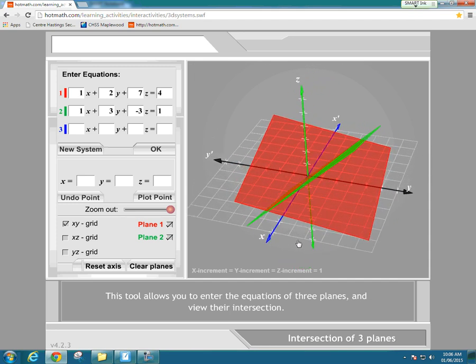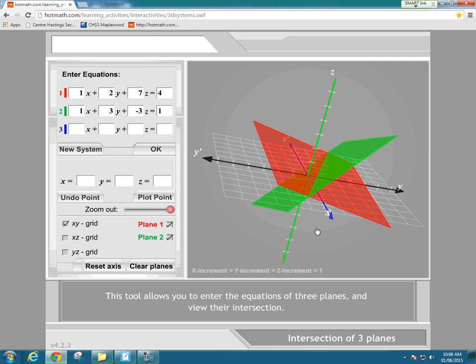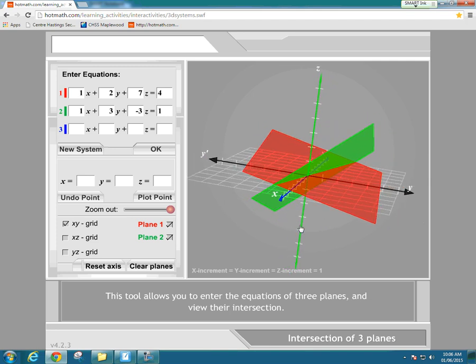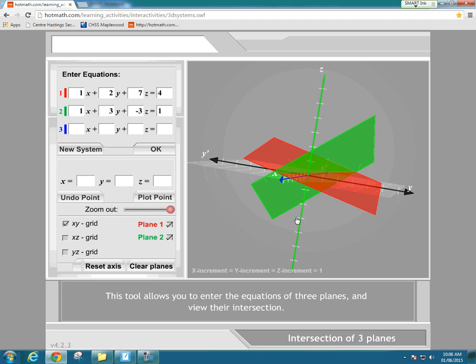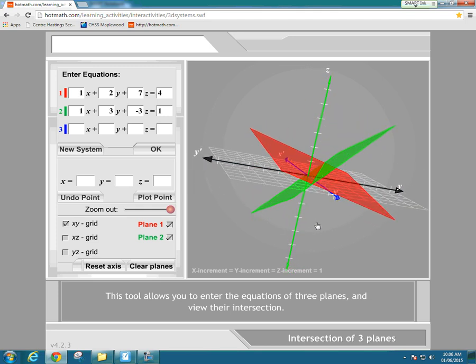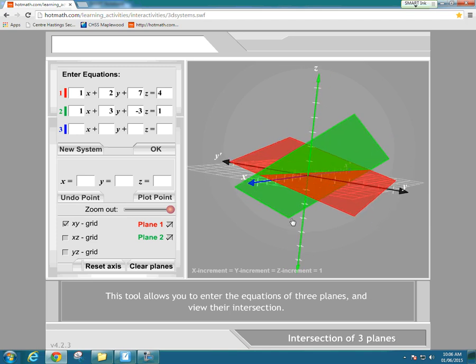There are the two planes, the red one and the green one, and you see how they intersect at a line. That's a really good visualization of what's going on.